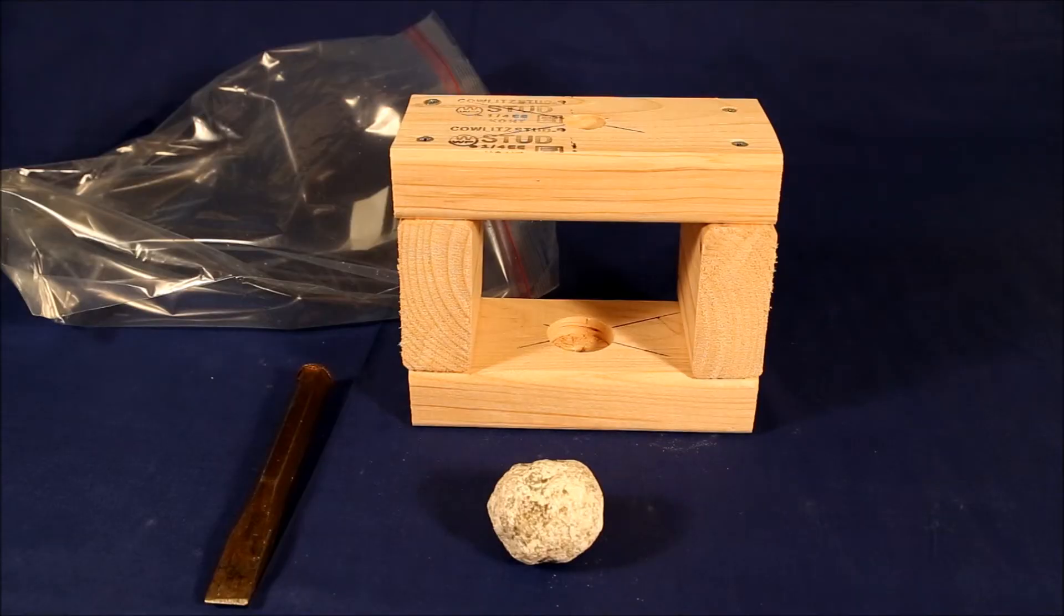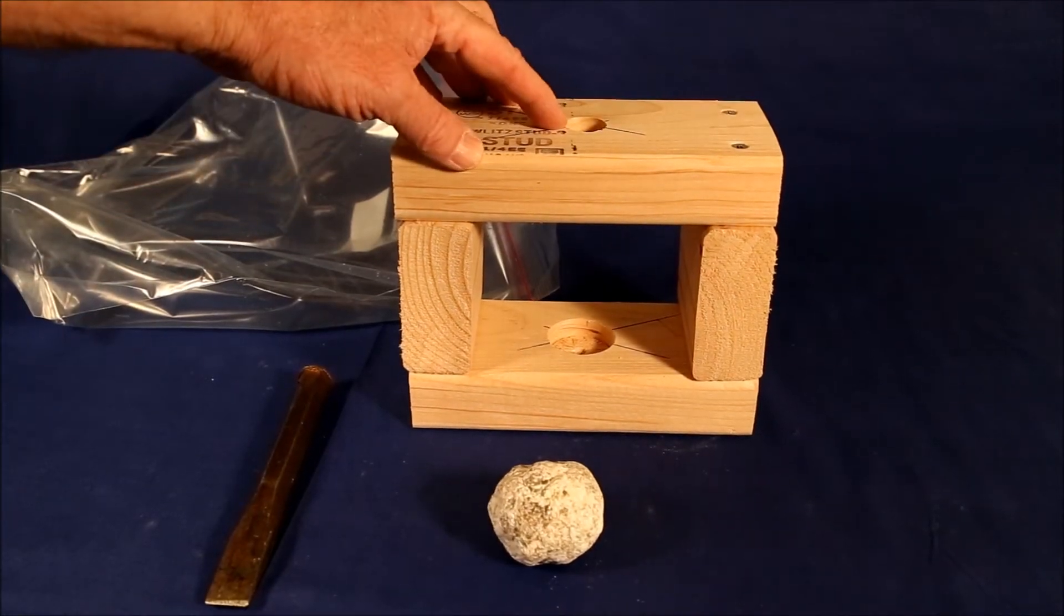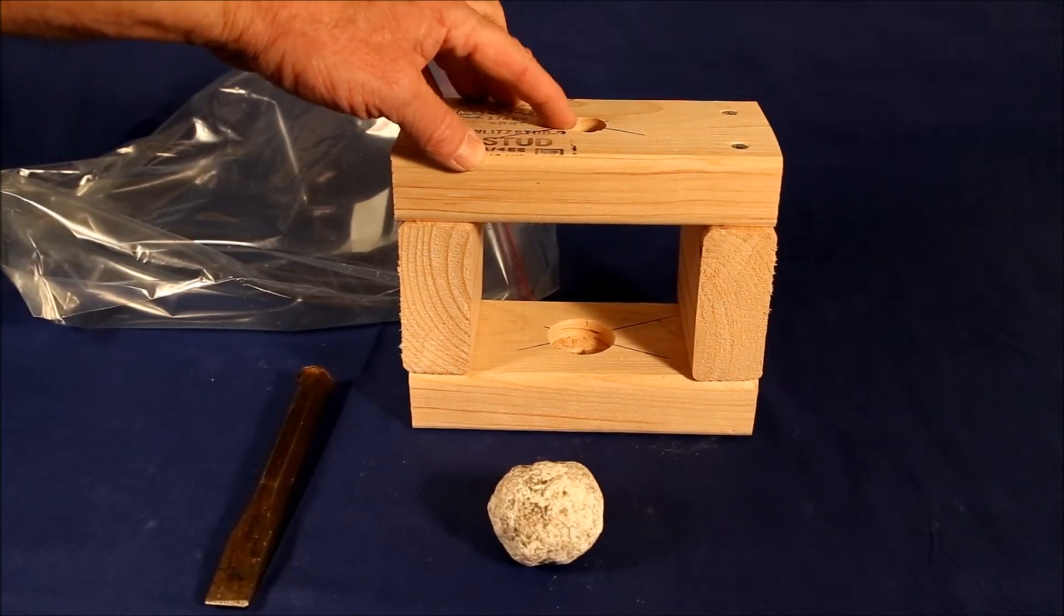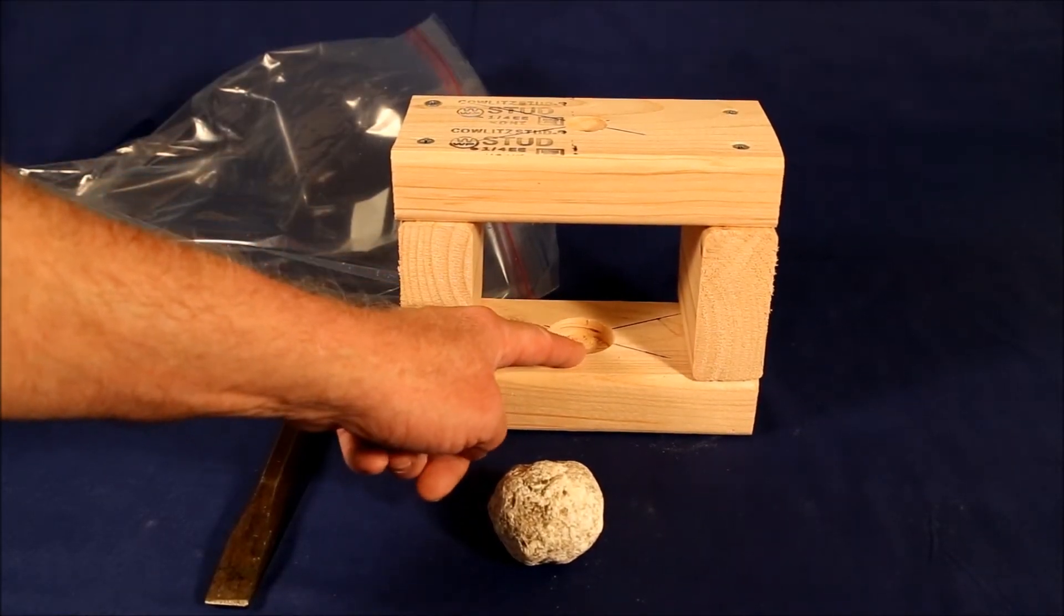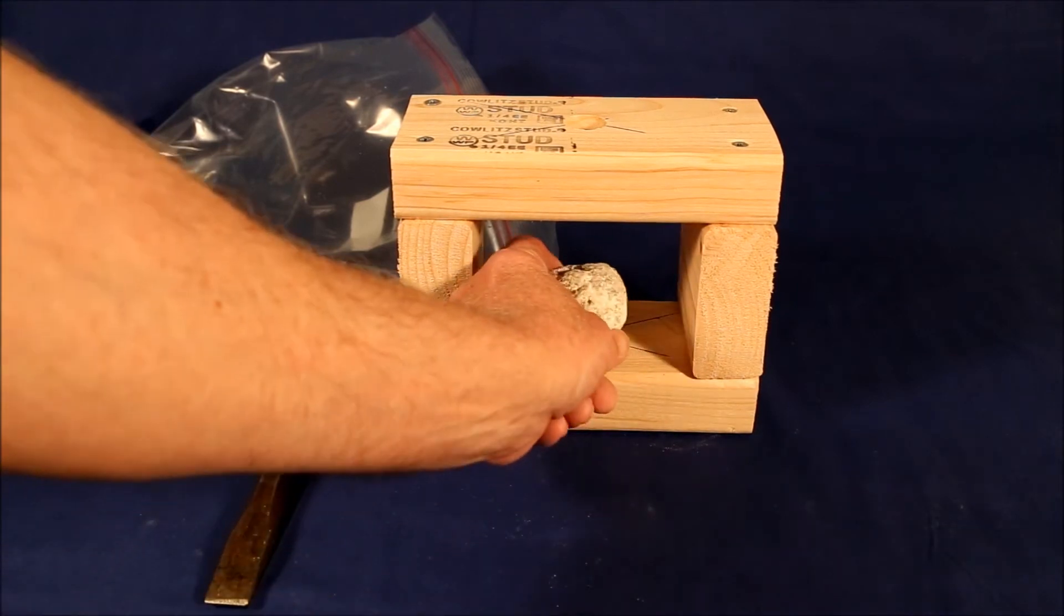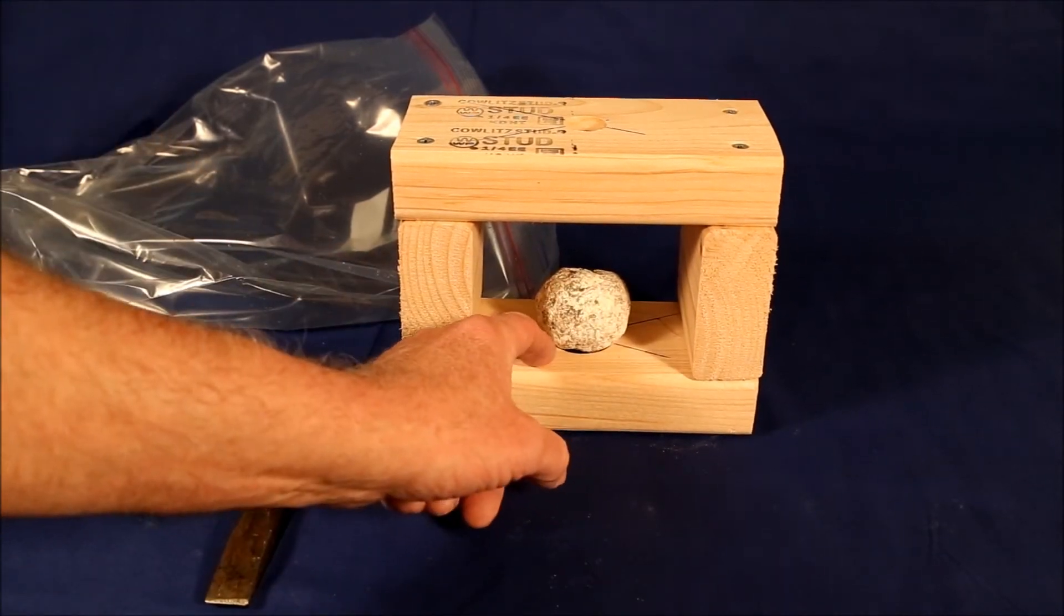Using just a few scraps of 2x4 and some screws, I made this geode breaker. It has a 7 1⁄8 inch hole in the center at the top, and a 1 1⁄2 inch hole about halfway down through the bottom piece. You place a geode in the bottom, and that holds it there.